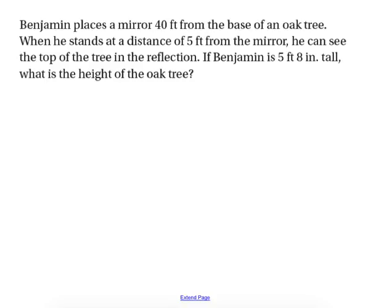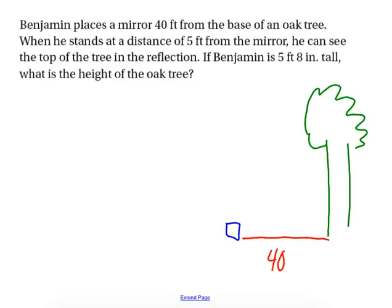Let's practice another example. It says, Benjamin places a mirror 40 feet away from an oak tree. I think the picture is worth a thousand words. Here's my oak tree. Here's my mirror. 40 feet away. And then it says he stands a distance of 5 feet from the mirror. So, here's Benjamin. And he is 5 feet away from the mirror. You can see the top of the tree in the reflection of the mirror. It tells us that Ben is 5 feet 8 inches tall. What is the height of the oak tree?